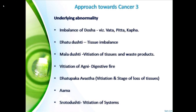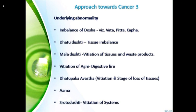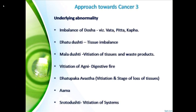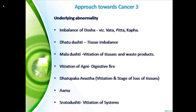The next approach addresses underlying abnormalities — the imbalance of doshas: vata, pitta, and kapha. Dhatu-dushti, or tissue imbalance, is very important. Mala-dushti is also a factor. Vitiation of agni is a main point we consider. The dhatu-paka-avastha — the vitiation and stage of loss of tissues in the body — is key. Ama and srotodushti, the vitiation of the body's systems, are also observed.